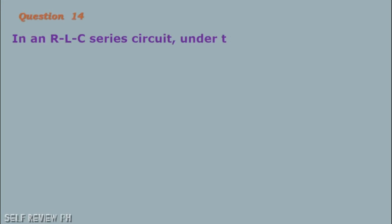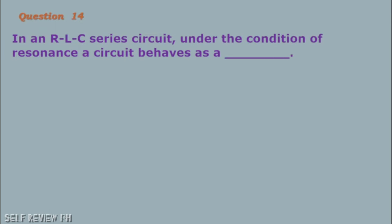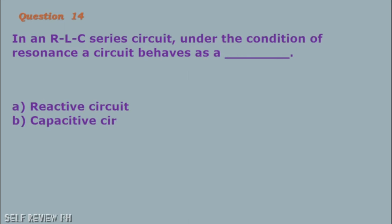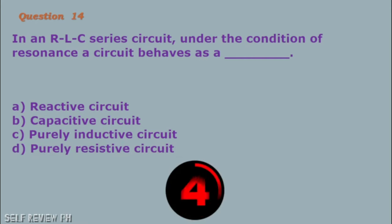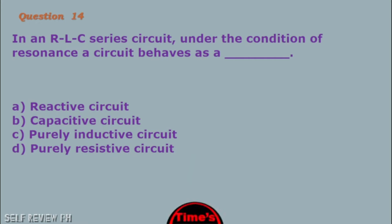Question number 14: In an RLC series circuit, under the condition of resonance, a circuit behaves as a blank. A. Reactive circuit B. Capacitive circuit C. Purely inductive circuit D. Purely resistive circuit. The correct answer is letter D, purely resistive circuit.